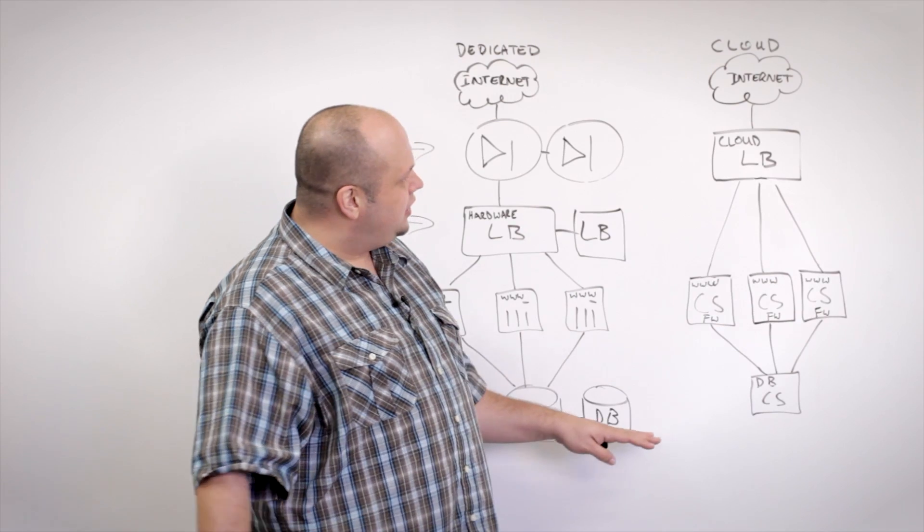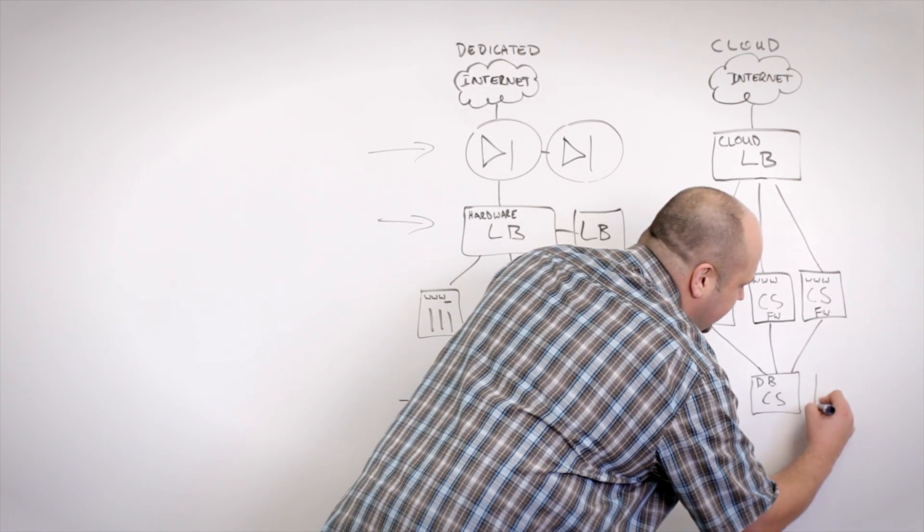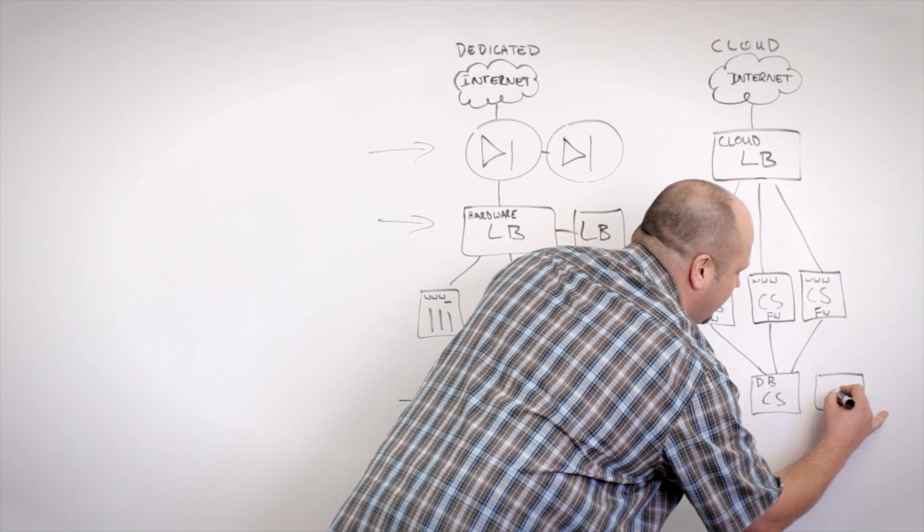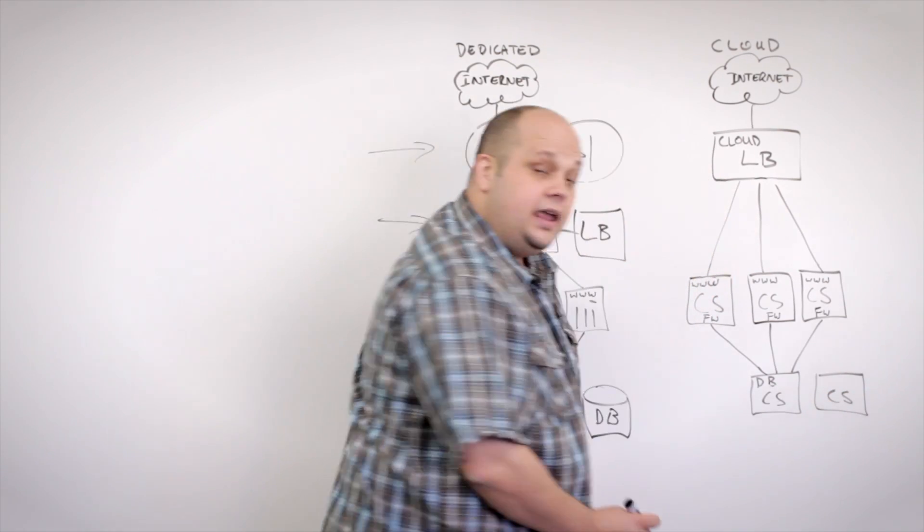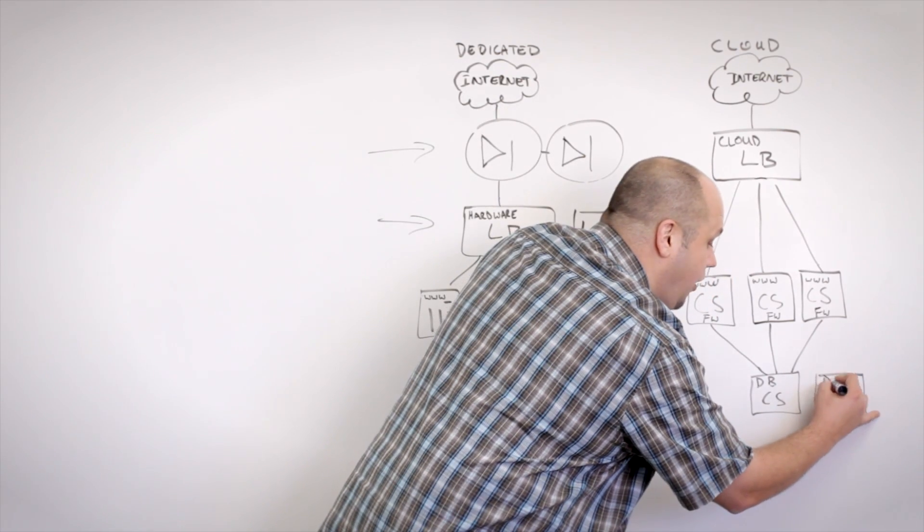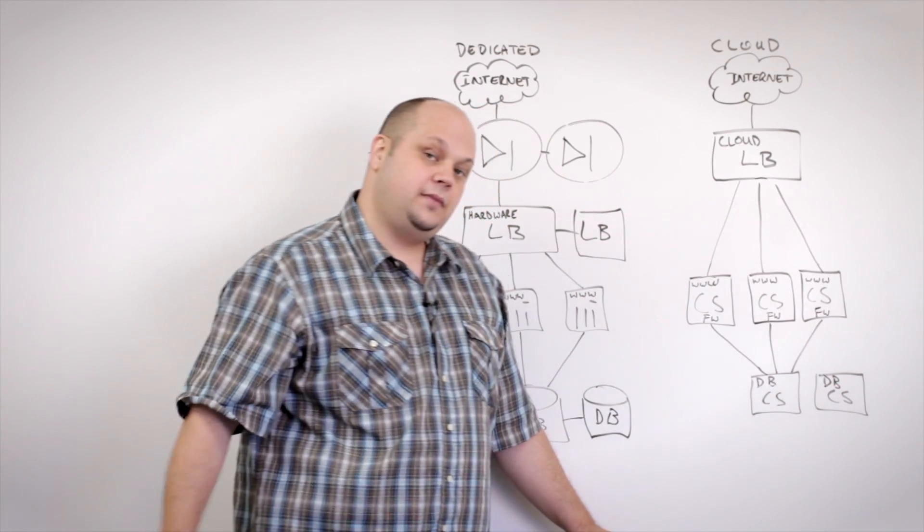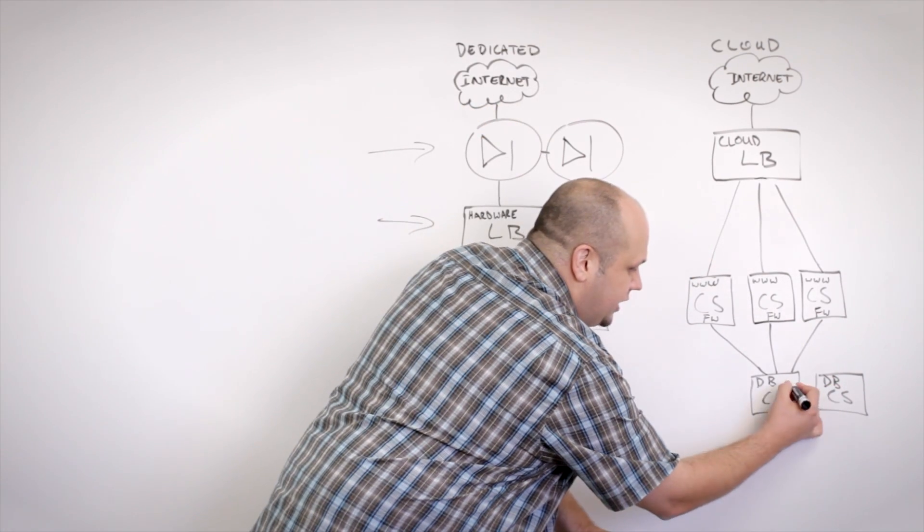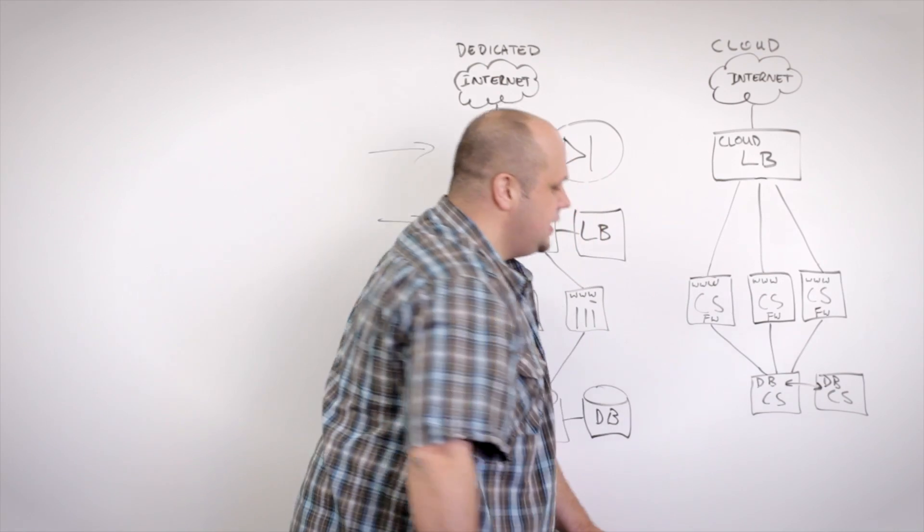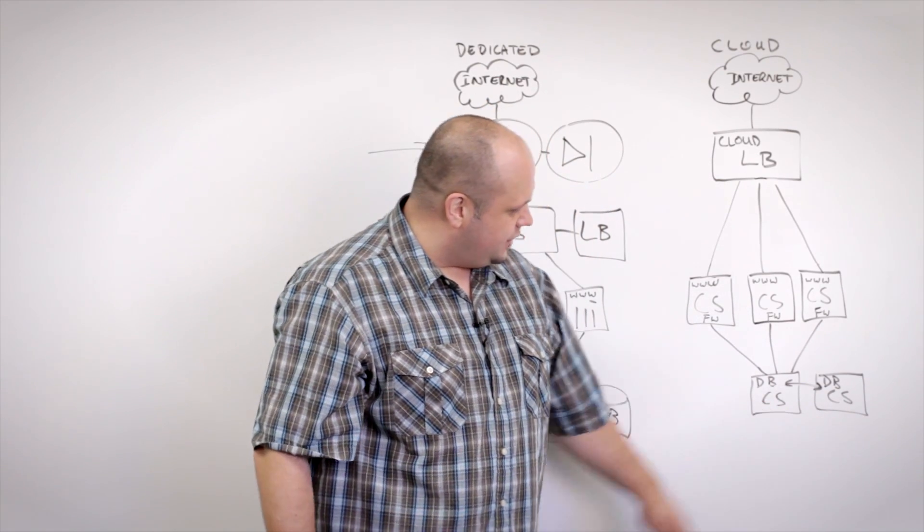So to add high availability and redundancy to my cloud environment, all I would need to do is deploy another cloud server, install my database software on that cloud server, and then set up database replication between these two databases. And I would have two highly available databases.